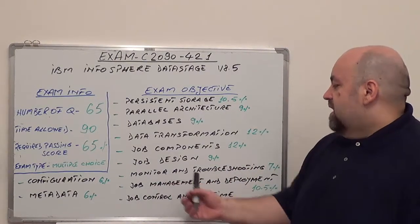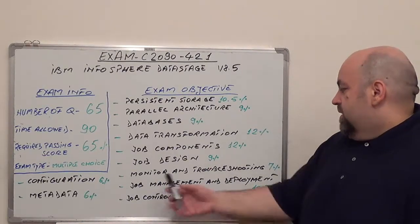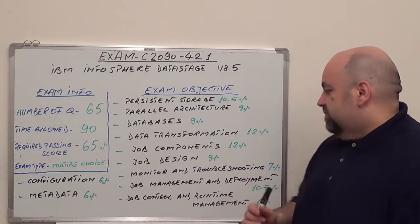After that, job design, 9% from total operation. We're going to follow with monitoring and troubleshooting, 7% from total operation.